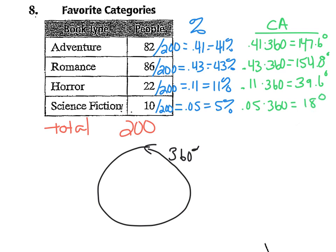To double-check our work, we're going to make sure that our degrees add up to 360. When I add them up, sure enough I got 360 degrees, so it seems like all my work is checking out. The last step is to put the dot in the center of the circle, draw your radius, and then line up your protractor and start drawing the angles. So those are some examples of how to find the percent and central angle when making a circle graph.